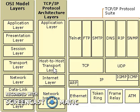Another transport layer protocol is the User Datagram Protocol. It provides connectionless, best-effort service. As a result, applications using UDP as the transport protocol have to provide their own end-to-end integrity, flow control, and congestion control if desired. Usually, UDP is used by applications that need a fast transport mechanism and can tolerate the loss of some data.